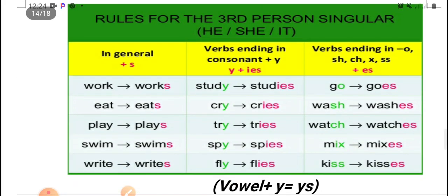Let's start rules for the third person singular with he, she, it. In general, I put s in the end of the verb. For example, work works, eat eats, play plays, swim swims, write writes.